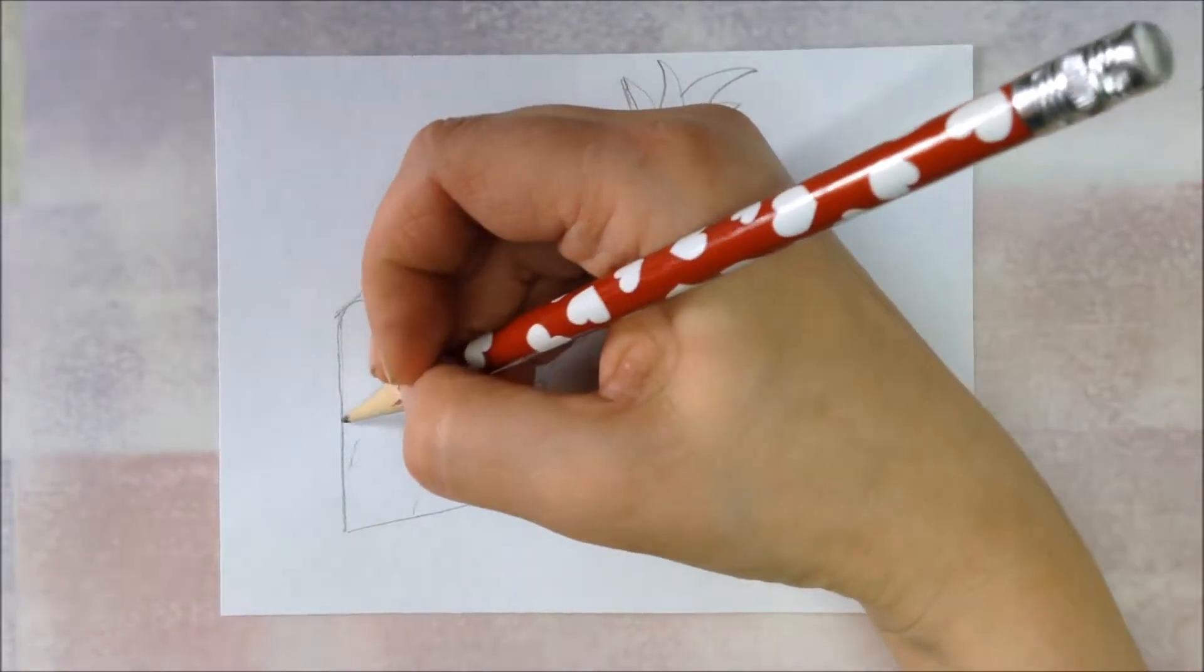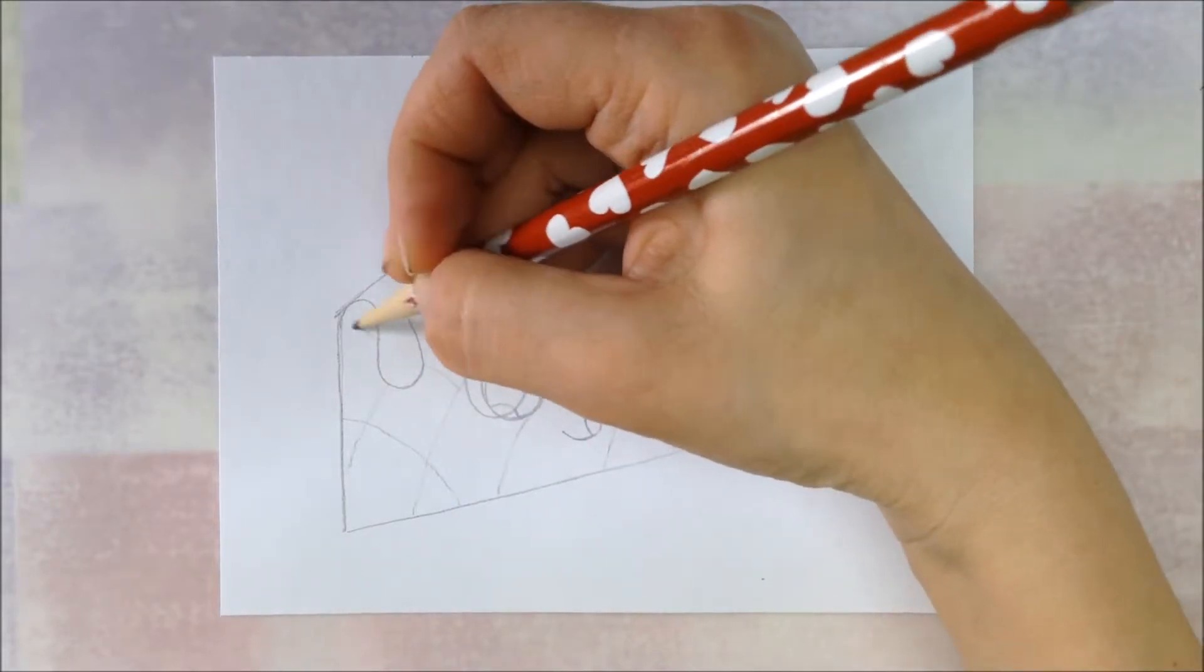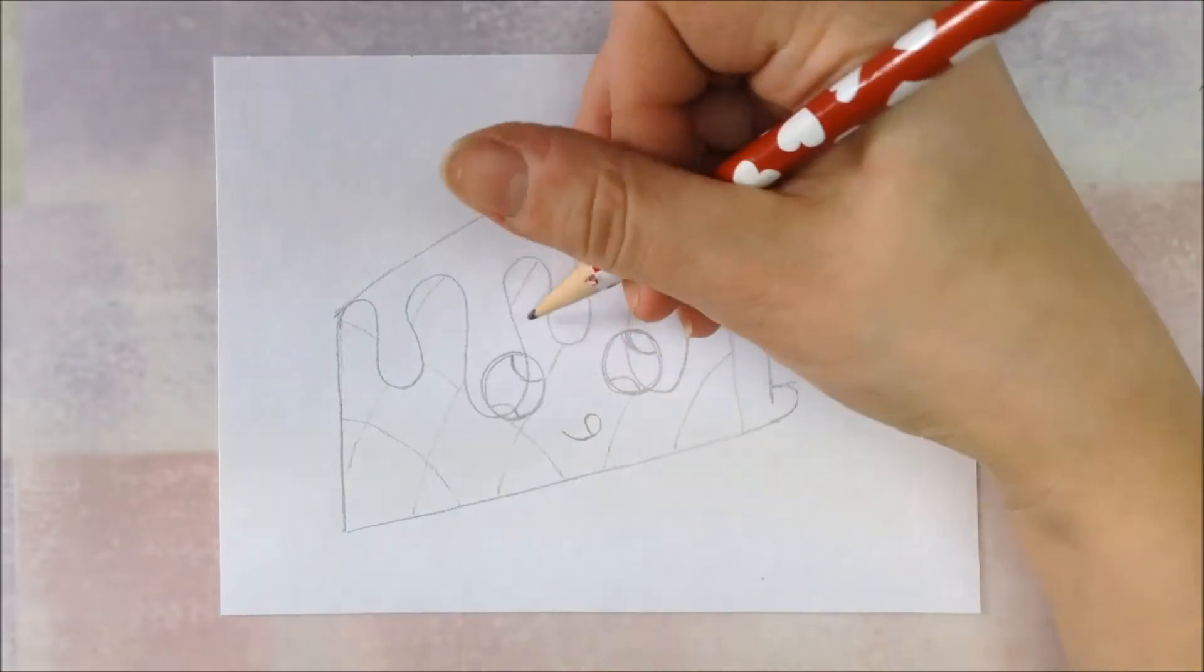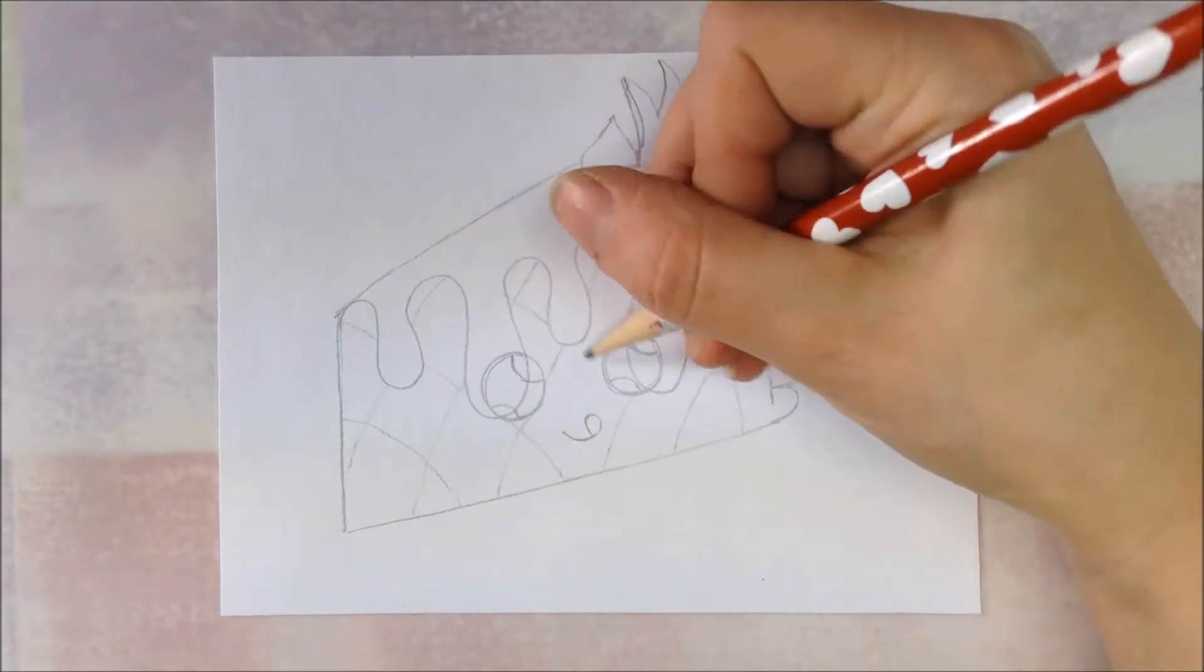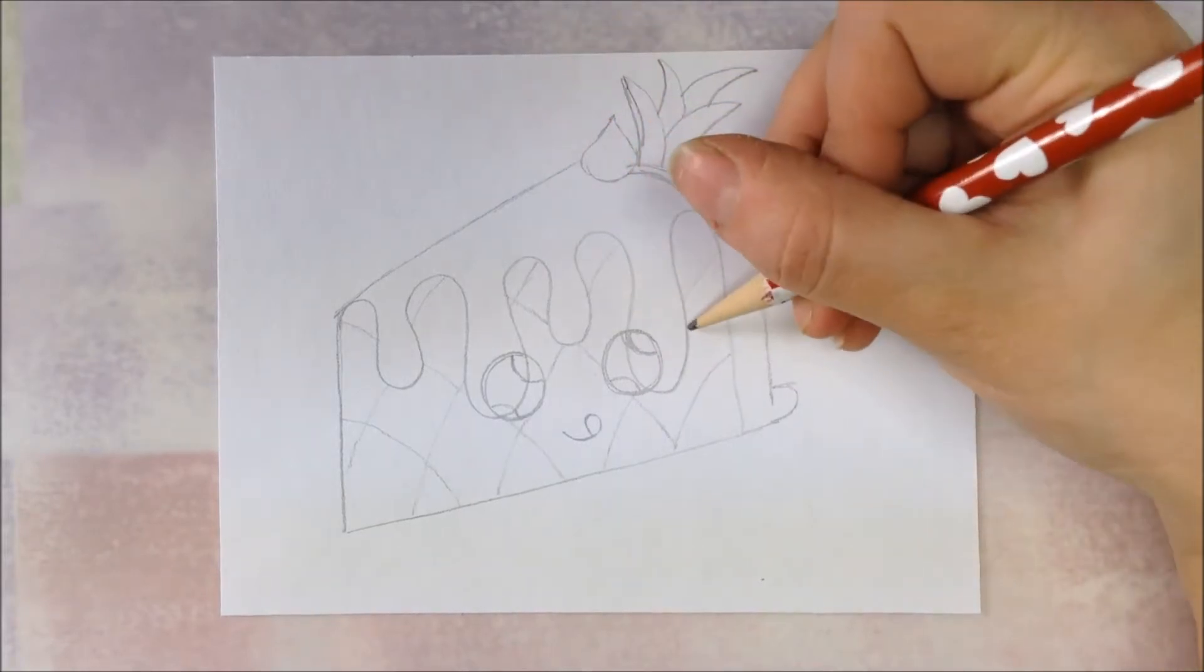And then we also go the other direction with our curved lines, leaving space. And all these lines are going to go behind the icing, behind the eyeballs, so that the icing looks like it's on top.